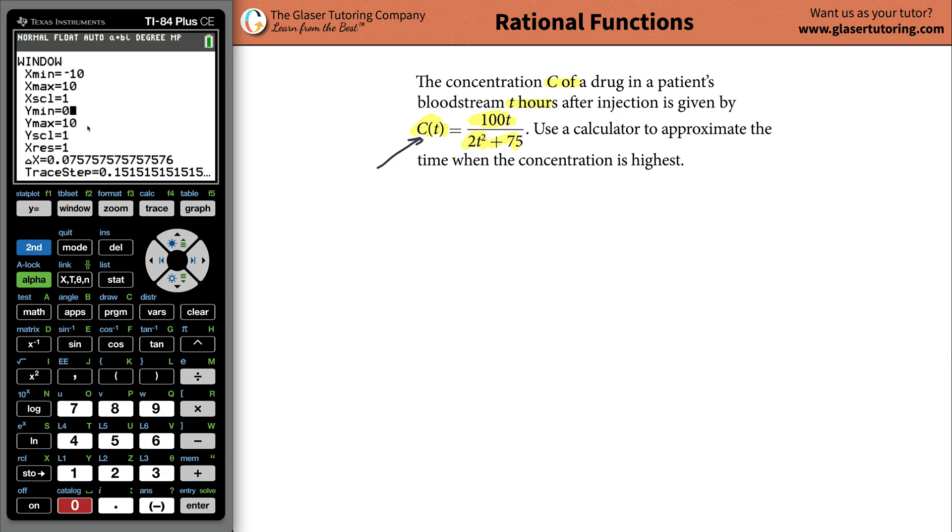Let's leave the max alone at 10 for now. We'll see if we have to adjust that at any point in time. Now also think about your time. What's the smallest amount of time you can think of? Assuming there's no such thing as negative time, in terms of T hours after injection of a drug, how can you have negative time after some injection? You can't, it's going to be a minimum of zero. So we'll leave the rest alone. We'll say the X max is 10, and the Y max is going to be 10 as well. Let's now hit our graph.